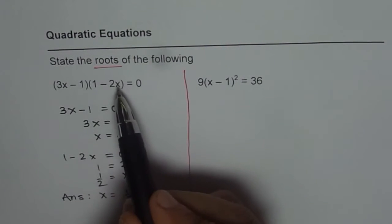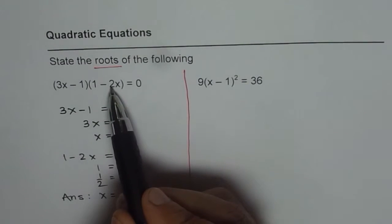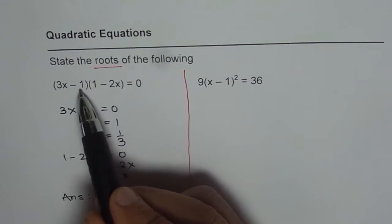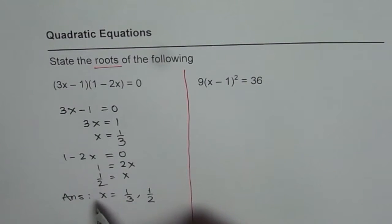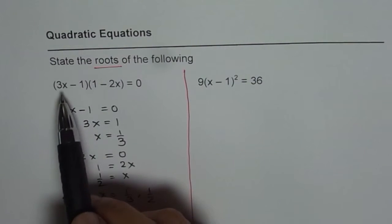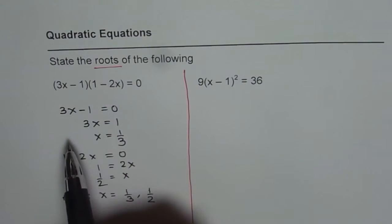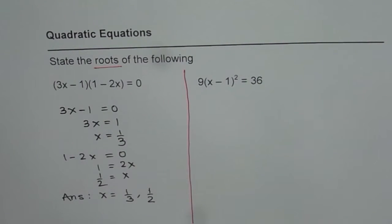So if I put 1 over 2 here, then 2 times half is 1, 1 minus 1 is 0, and 0 times anything will give us 0, so the equation will be valid. In this case also, if I write x as 1 third, 3 divided by 3 is 1, 1 minus 1 is 0. So that is how you can always solve quadratic equations when given in factored form.